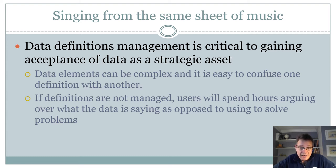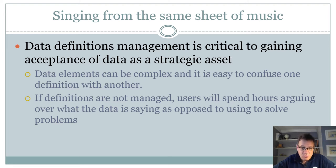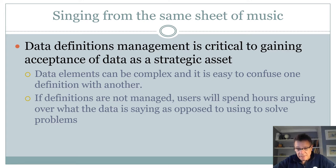This is especially common when the data is telling people something they don't necessarily want to hear. If you're getting some piece of news you may want to avoid, you might say, 'What about this? What about that?' And if definitions aren't managed properly, there are lots of places to potentially hide an issue that the organization should really be addressing.